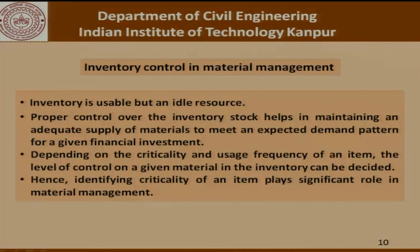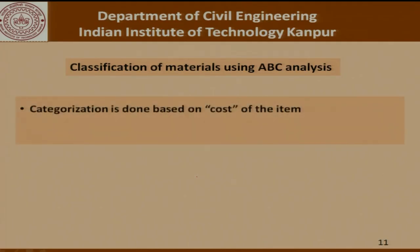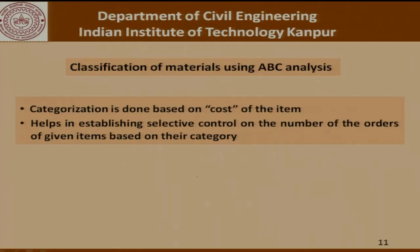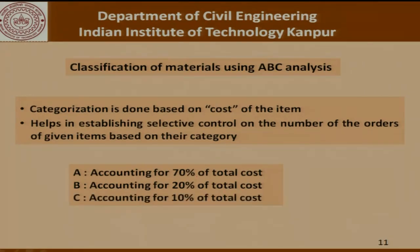Identifying the criticality of an item plays a significant role in material management. One option available to us is what is called ABC analysis, where we categorize items based on their cost. This helps in establishing selective control on the number of orders of a given item based on their category. We can classify items as A — accounting for around 70 percent of the cost, B — accounting for 20 percent, and C — accounting for 10 percent. Items classified as A need to be watched more carefully than items classified as C.